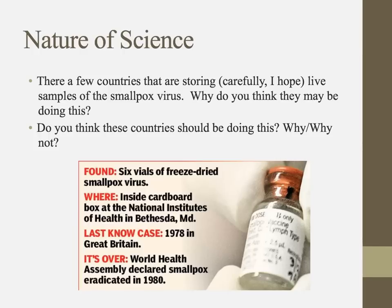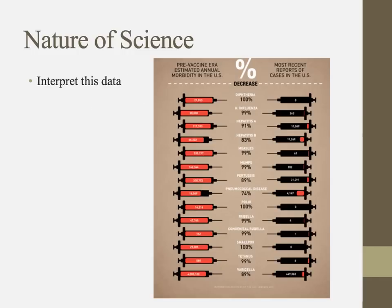A few countries are storing samples of the smallpox virus. Think about why they might be doing this, and whether you think they should be. Here's some morbidity data — meaning deaths — from the pre-vaccine era showing common diseases and their most recent reported cases in the U.S. Look at this data and consider what assumptions we can make. And that'll do it for Chapter 11.1.